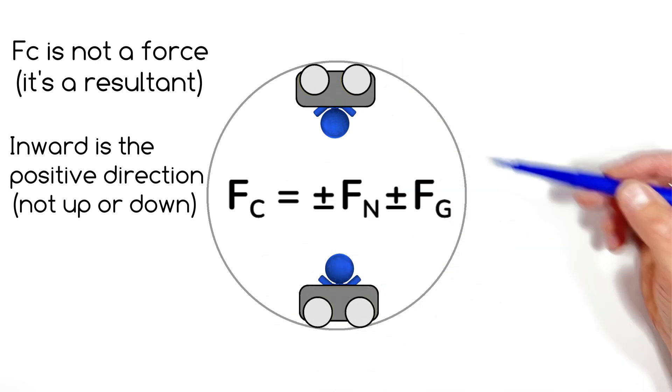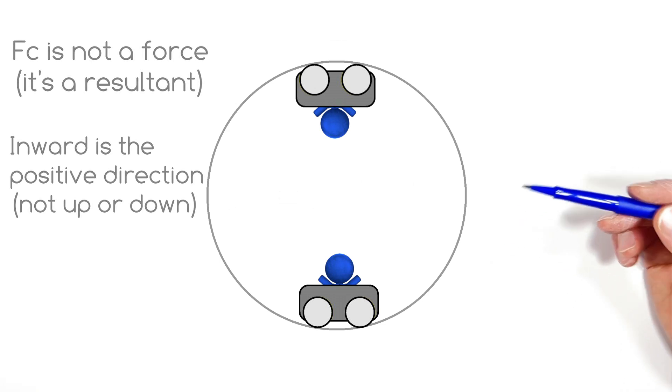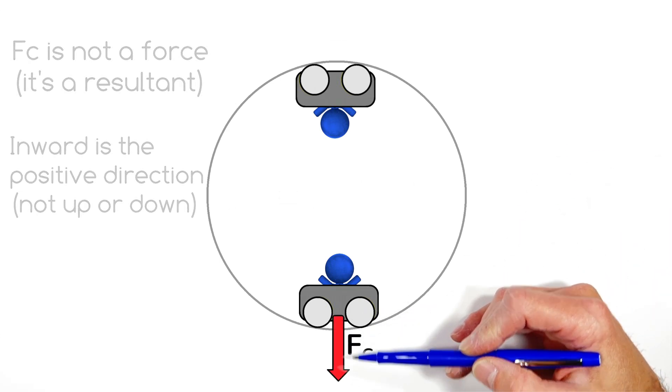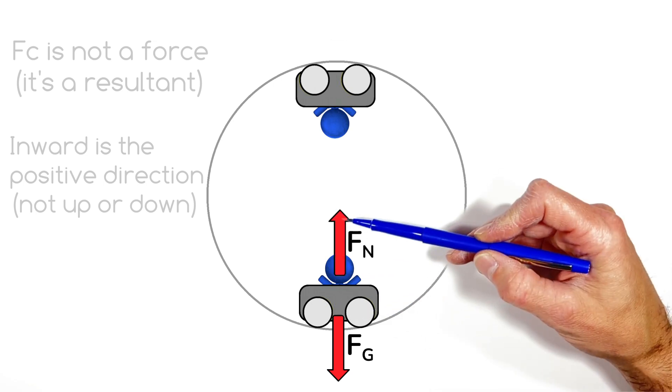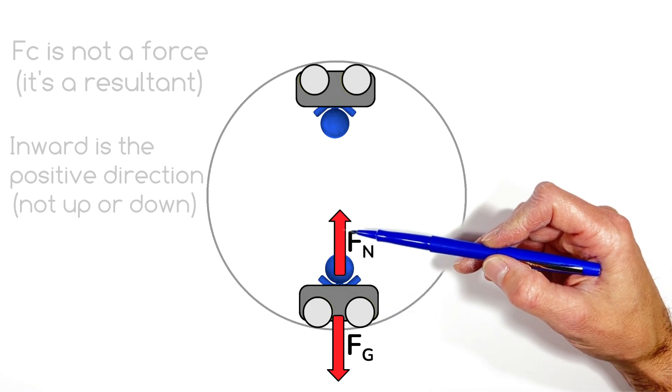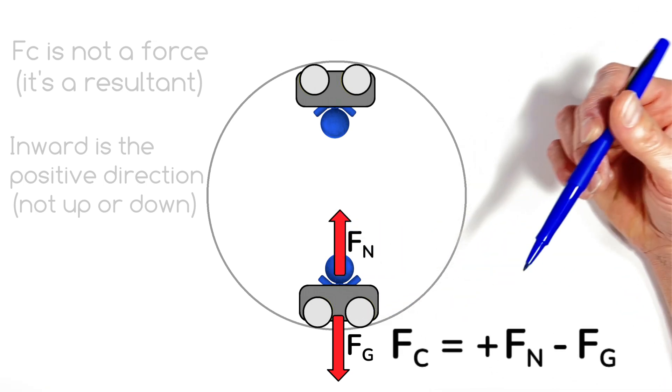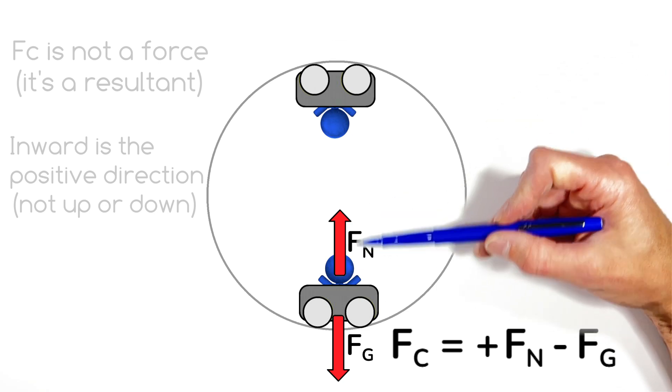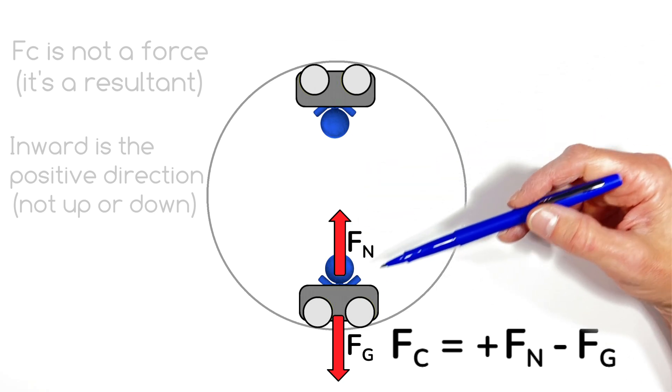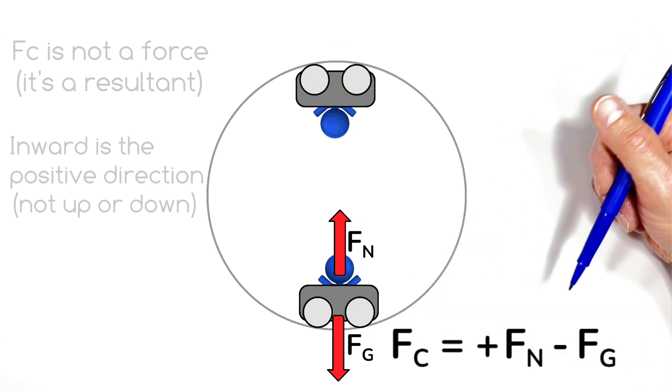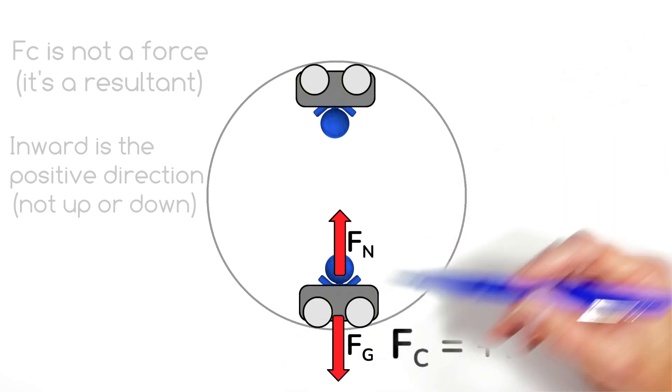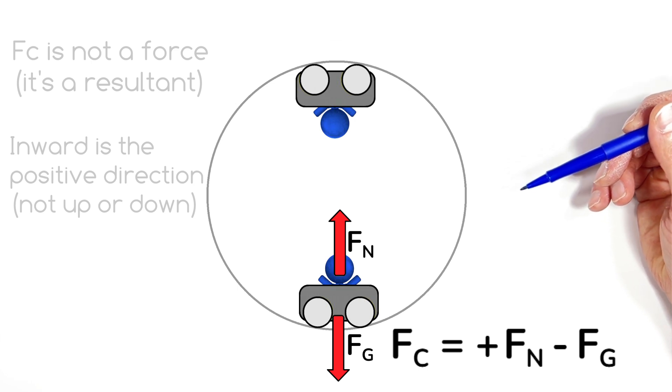So for example, let's look at the roller coaster cart going around this loop here. Down at the bottom here, there's gravity acting downward on the cart and the normal force from the track holding the cart up. So in this case down here, we'd say the centripetal force is equal to the normal force, which is going to be positive because it's upward, minus the force by gravity. That force by gravity is negative, not because it's down, but because it's outward, away from the center of the circle.